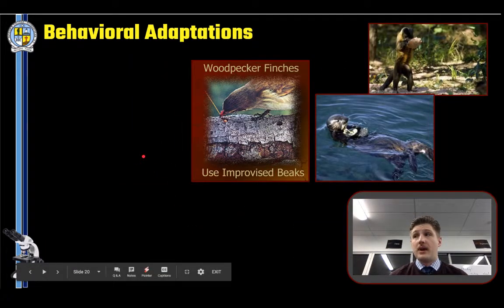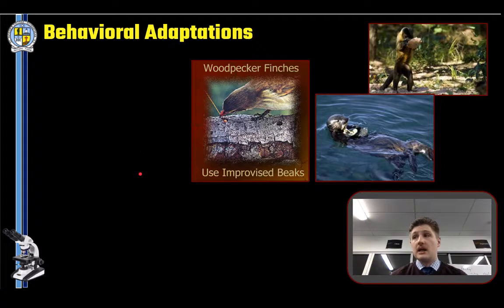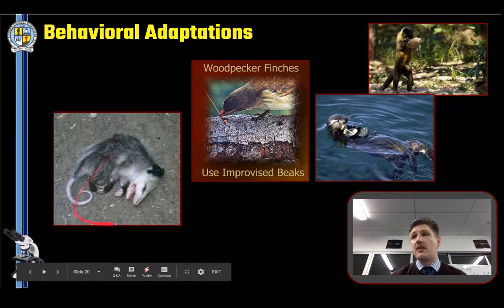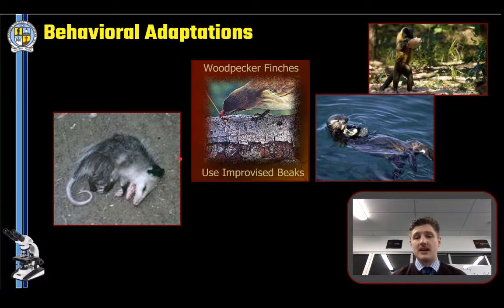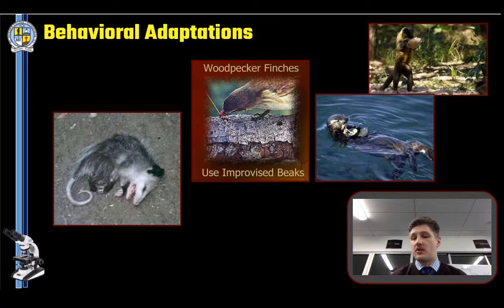Tool use is quite an interesting behavioral adaptation — when an animal has learned to use another object from its environment to manipulate or perform a specific task. We see chimpanzees doing this with termite mounds, a bird using a stick to get a grub out, otters breaking open clams by smashing them with a rock on their chest, and monkeys cracking nuts. Another cool one is playing dead — possums have the ability to play dead because some animals won't touch prey that isn't moving if they're not scavengers.